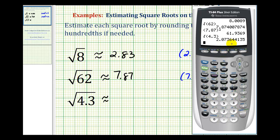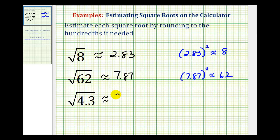Again, rounding to the hundredths, we would have approximately 2.07. Which means if we square 2.07, it should be approximately equal to 4.3. Let's check this one as well.